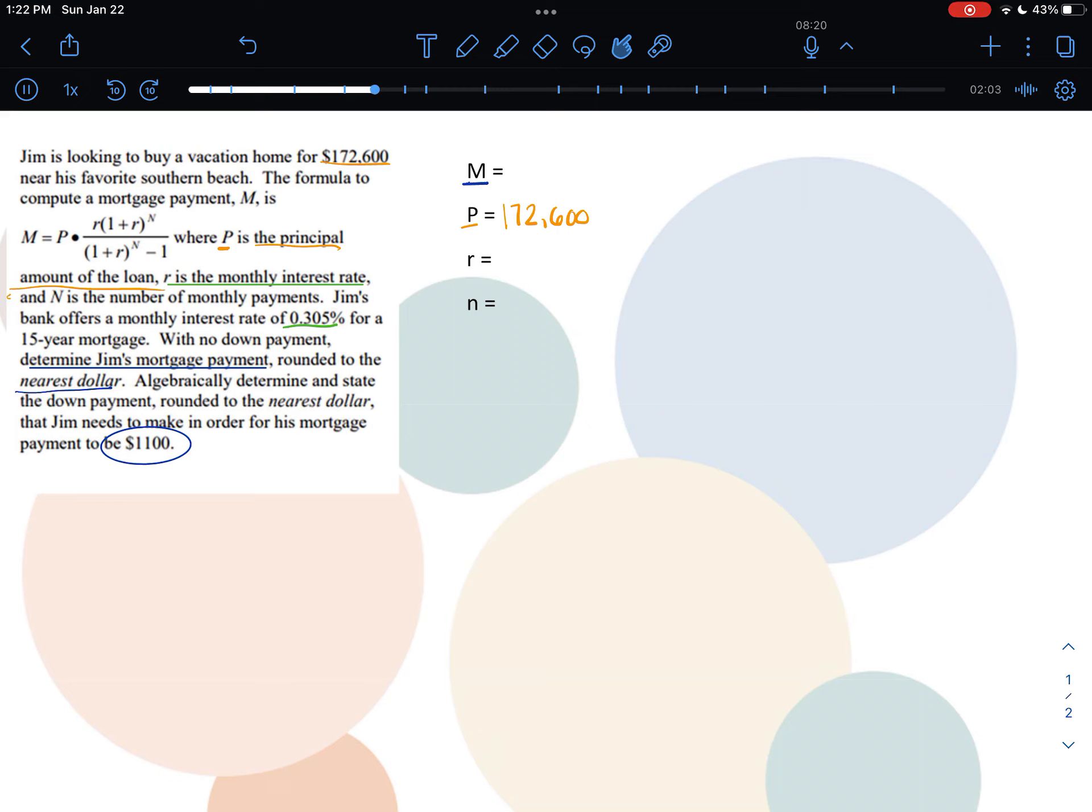Next, I'm going to need the monthly interest rate, and they give me that. It is 0.305%. That looks like it's in a decimal form, but it's not. I need to convert that percentage to a decimal, which is going to be 0.00305.